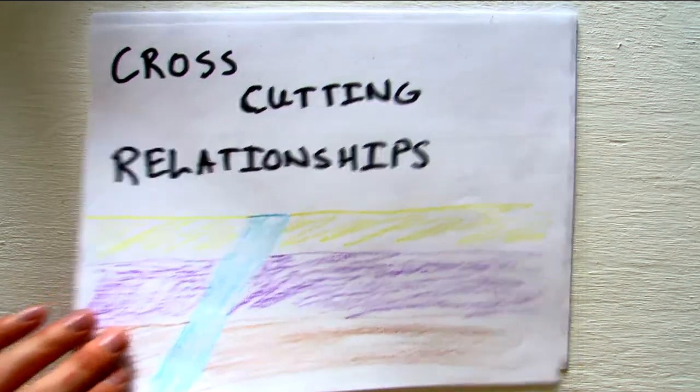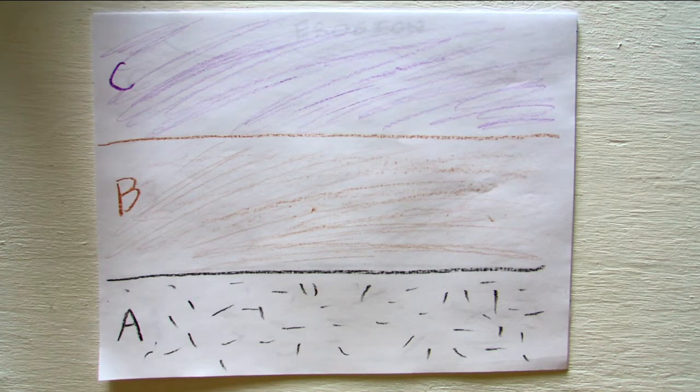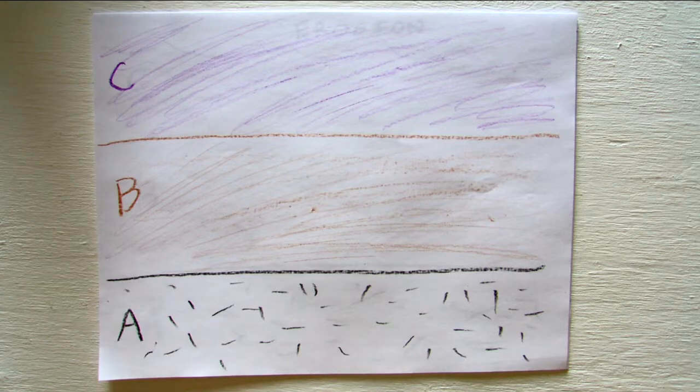Let's take a look at a fictitious landscape consisting of rocks A, B, and C. In this case, A would be the oldest, C would be the youngest, because C is on top and A is on bottom.